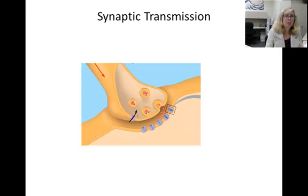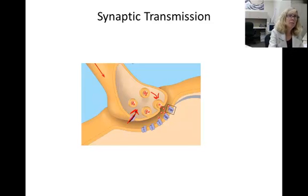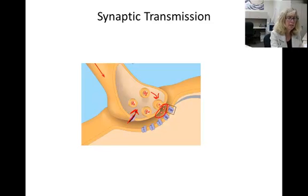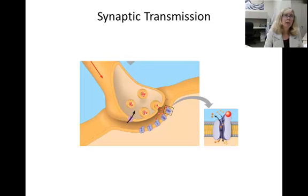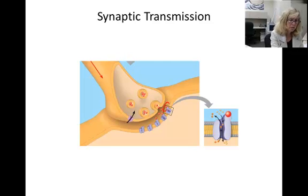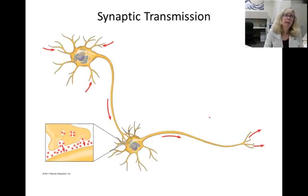Third, calcium flows into the terminal of the axon, which triggers the transport of vesicles to the plasma membrane for exocytosis. Fourth, the neurotransmitter is released into the synaptic cleft. Fifth, the neurotransmitter binds to the ligand-gated ion channel on the membrane of the postsynaptic cell, allowing the flow of ions into or out of the cell.